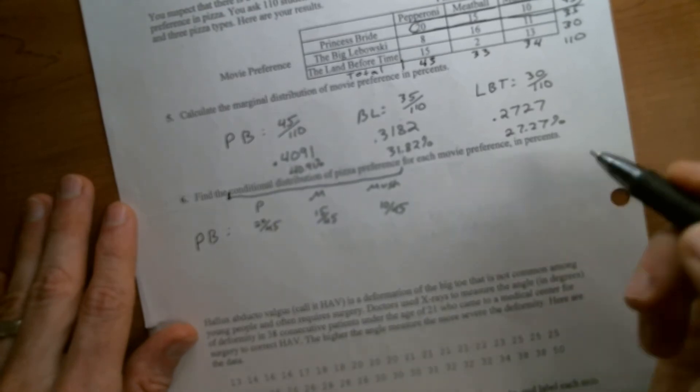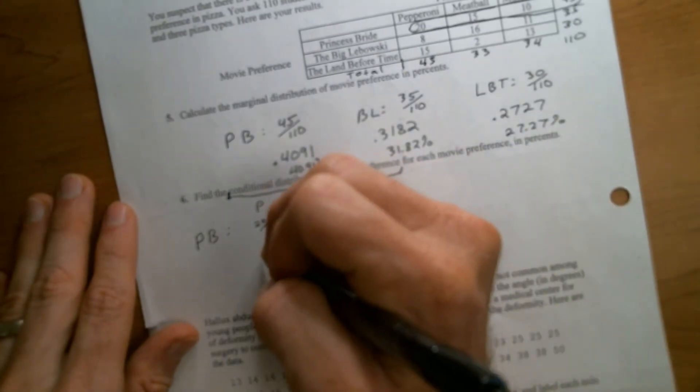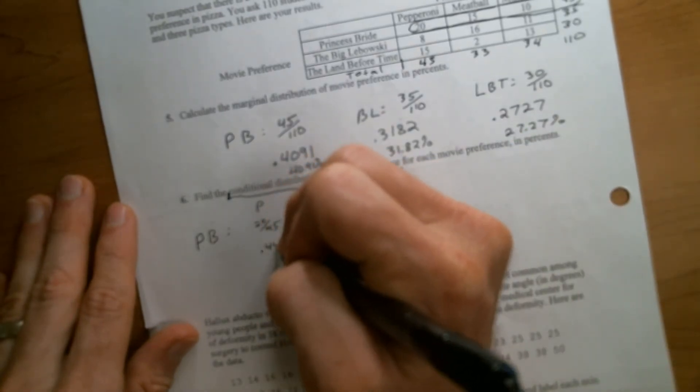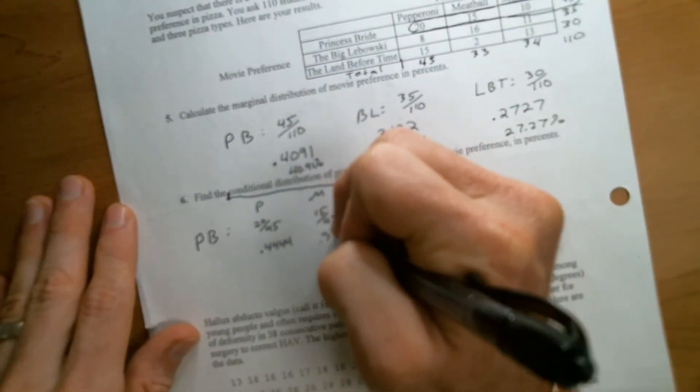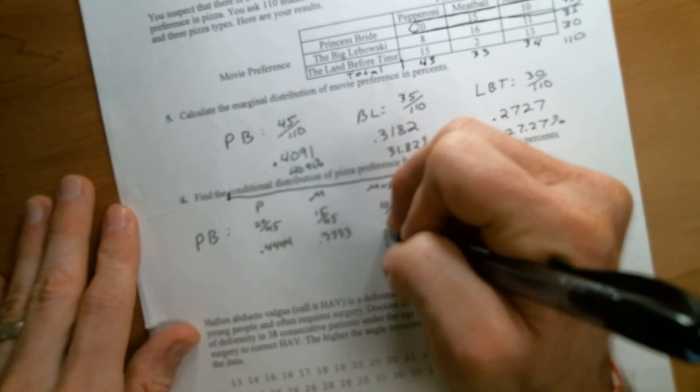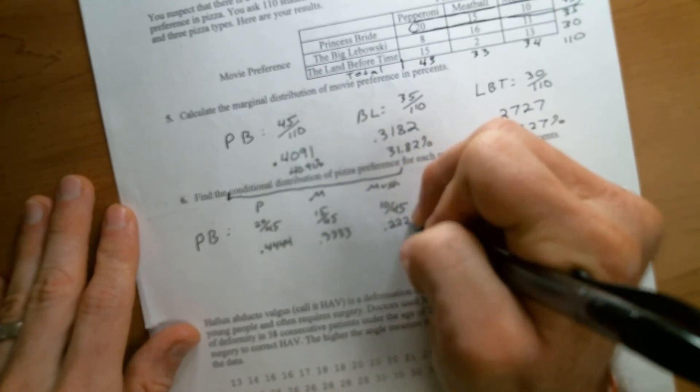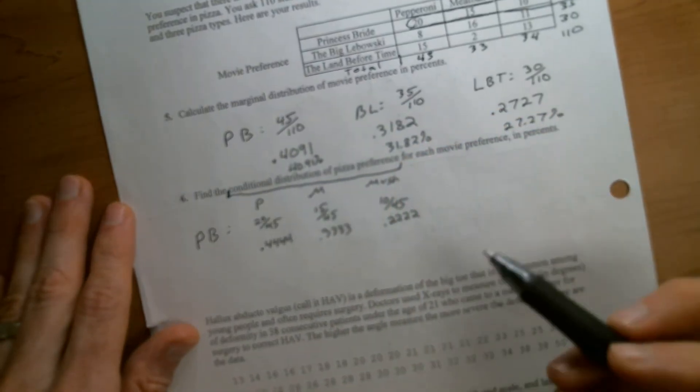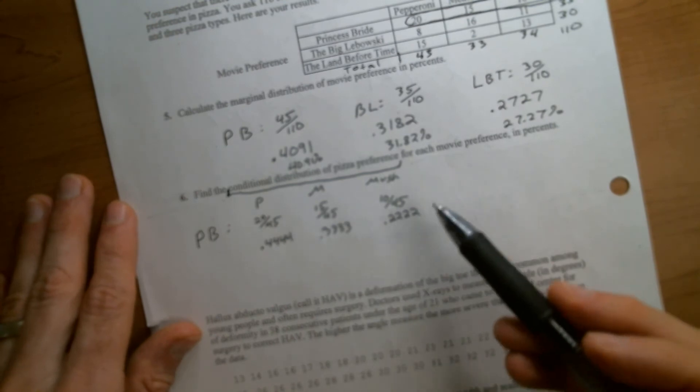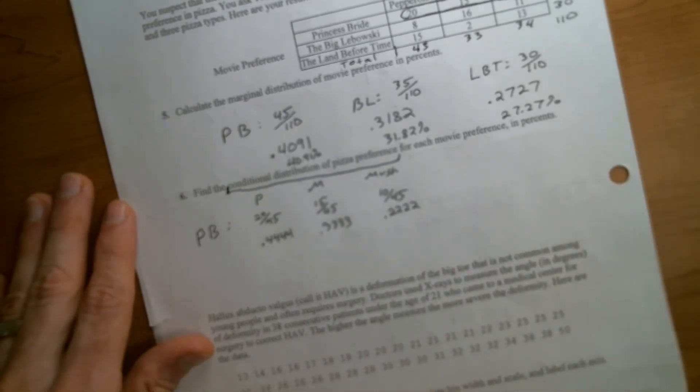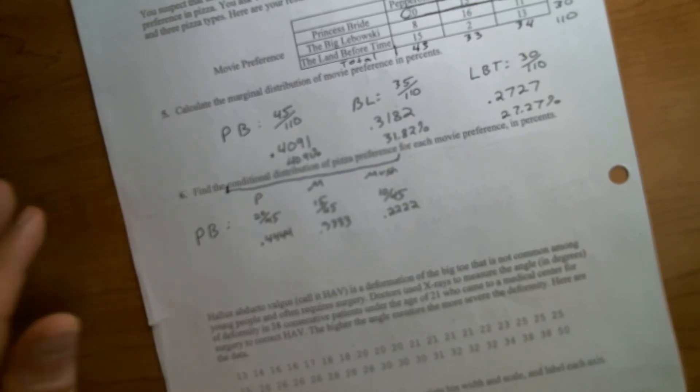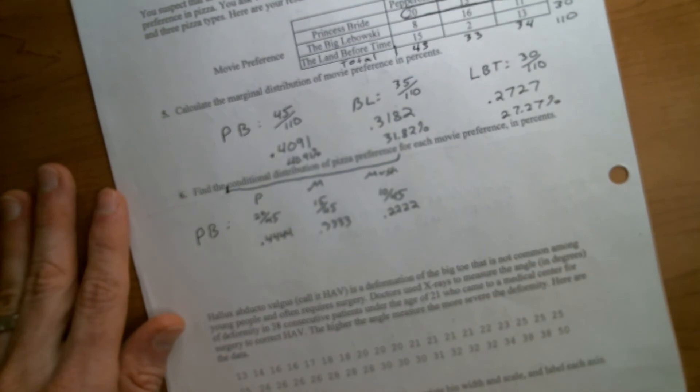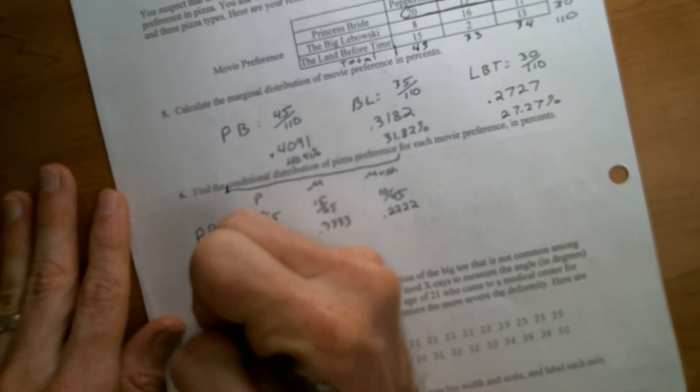And then we would have to repeat that once for each movie. And then the problem does say that these should be in percents. So this would be 0.4444. This one would be 0.3333. This one would be 0.2222. And yes, those don't add up to exactly one. There's what we call round off error, but that's fine. You don't have to modify one just so that they add up to one.